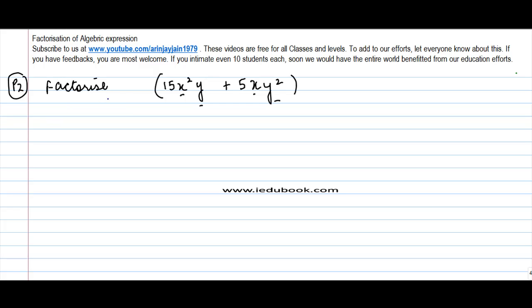As I mentioned, find out which is the larger term — where is the larger number of variables. It seems this is the one, so I write this as 15x²y and then I also write 5xy².